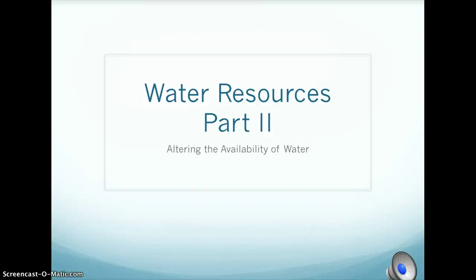This is the second part of our chapter on water. We're going to look at this idea that the availability of water is really unpredictable. And as a result, humans being creative have come up with a number of ways to control and alter the availability of water. So we're going to look at some of those ways and the consequences.